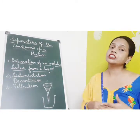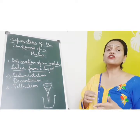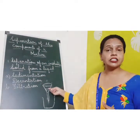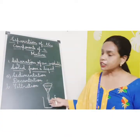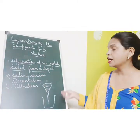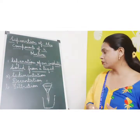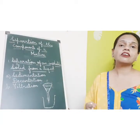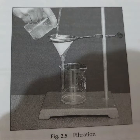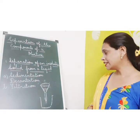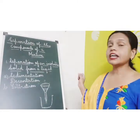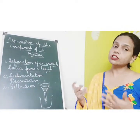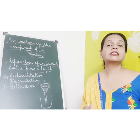For filtration, a filter paper is used. It is folded in the shape of a cone and then fixed in a funnel. The mixture is made to pass through this funnel. The clear liquid collects in the beaker and the insoluble particles get stuck to the filter paper. The liquid collected after filtration is called filtrate, and the particles trapped by the filter paper are called residue.